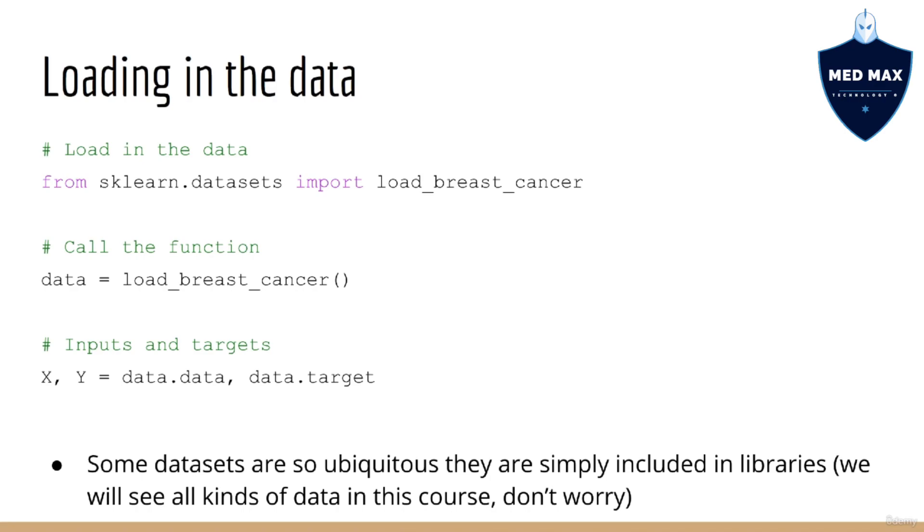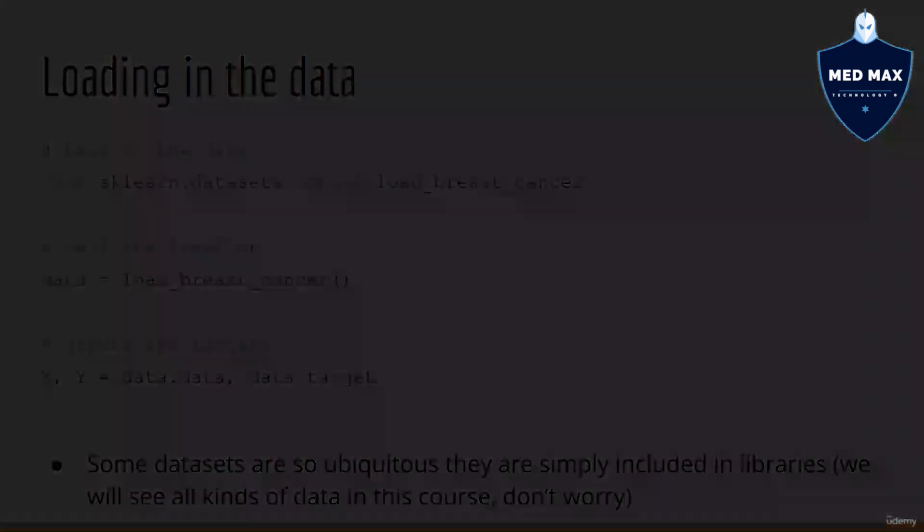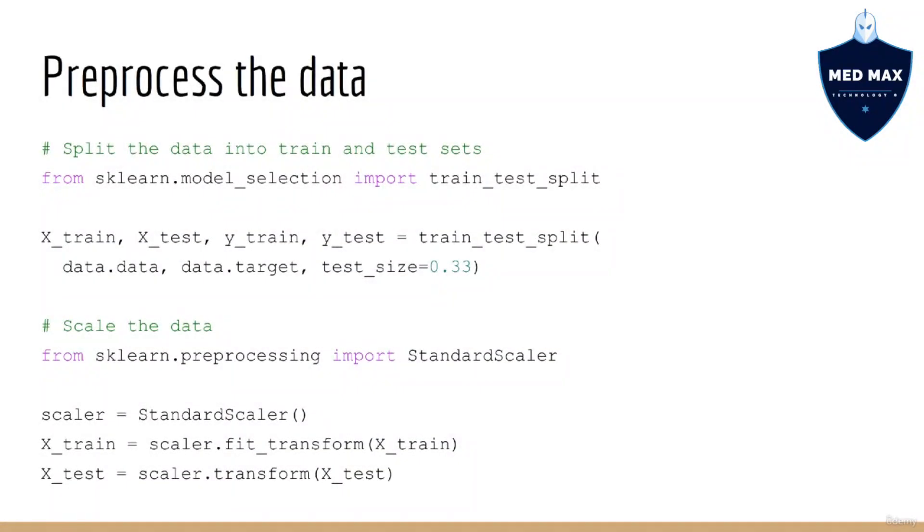Of course, there will be plenty of examples in this course where the data do not come from libraries, so you'll get experience with each. Loading in data from scikit-learn is super easy—we just call the function load_breast_cancer, which returns a data object. This data contains the X's and Y's, so we'll need to access them using the object's attributes. In particular, the inputs can be accessed using the data attribute and the targets can be accessed using the target attribute.